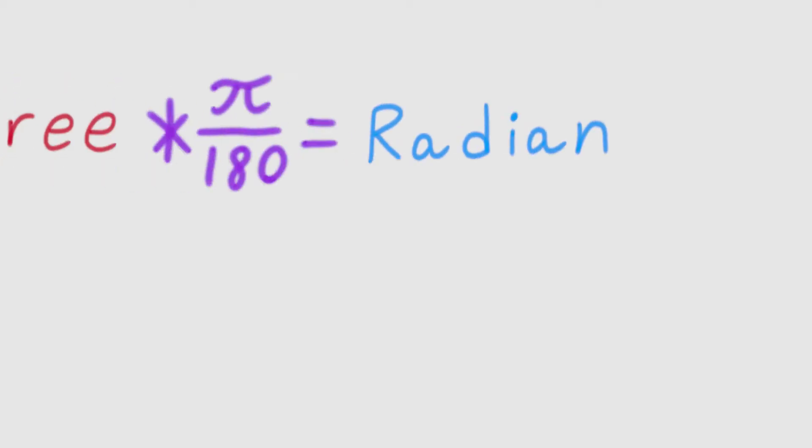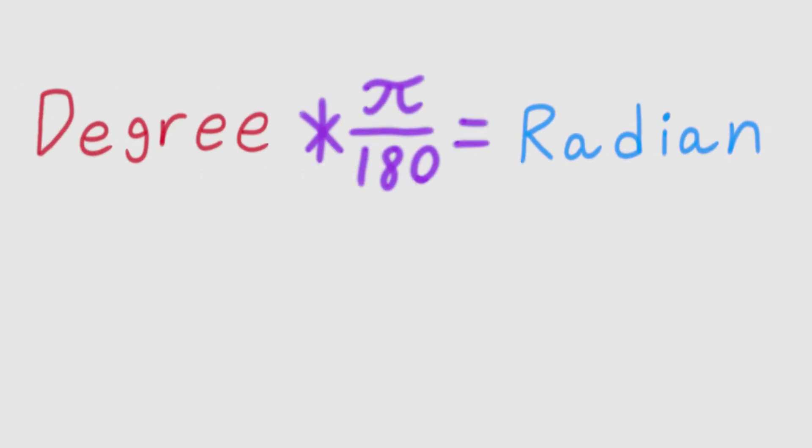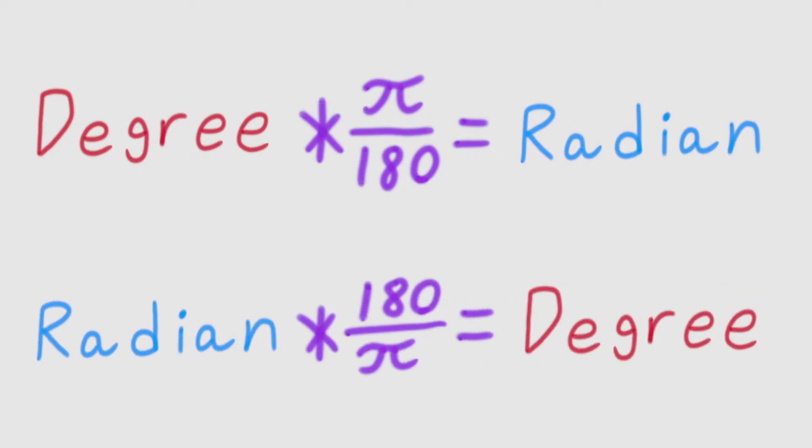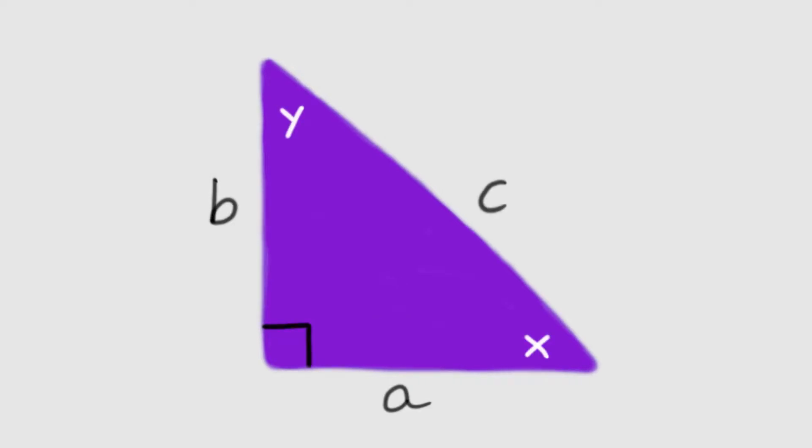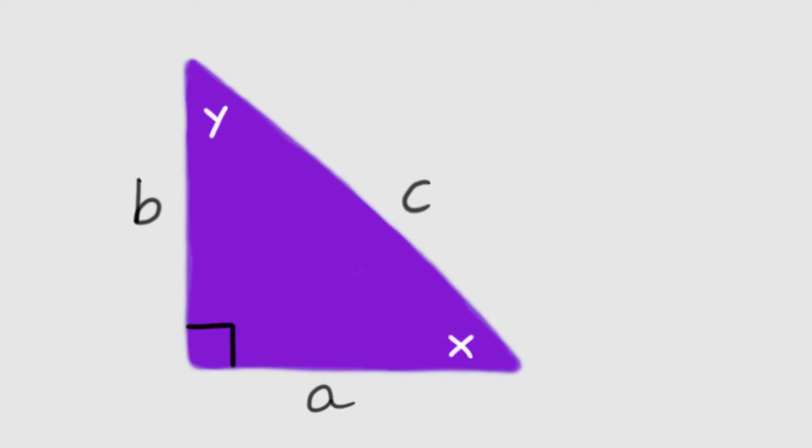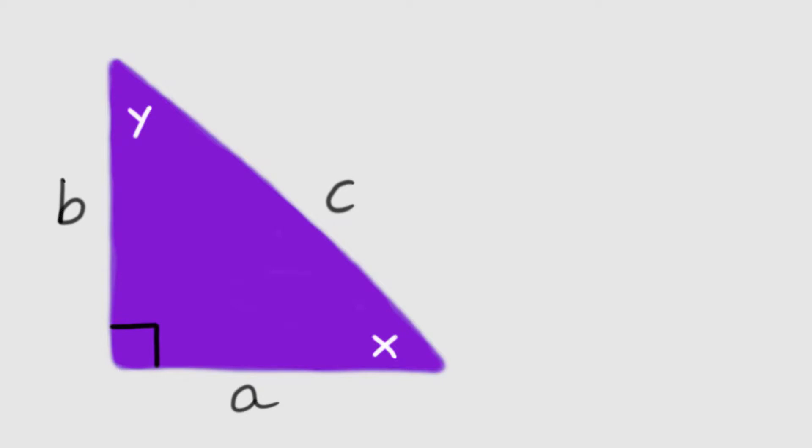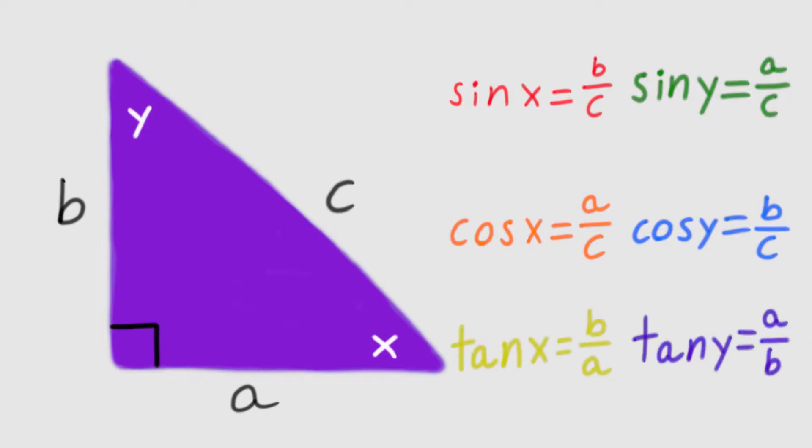The way to remember the conversion between degree and radian measurements is to multiply degree measurements by π over 180 to get radians, and to multiply radian measurements by 180 over π to get degrees. As for trig functions, the right triangles created from each spoke helps one to remember how to calculate for each trig function. Depending on where the angle is in the right triangle, the leg opposite the angle over the hypotenuse creates the sine function for that angle. Likewise, the leg adjacent to the angle over the hypotenuse creates the cosine function for that angle, and the leg opposite over the leg adjacent the angle creates the tangent function for that angle.